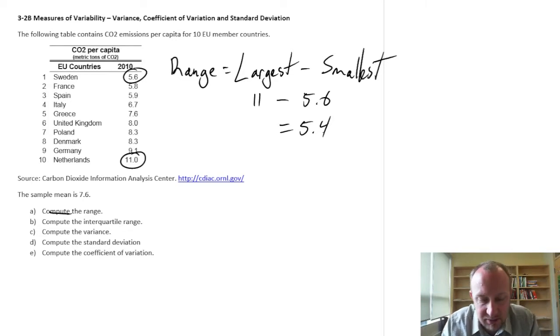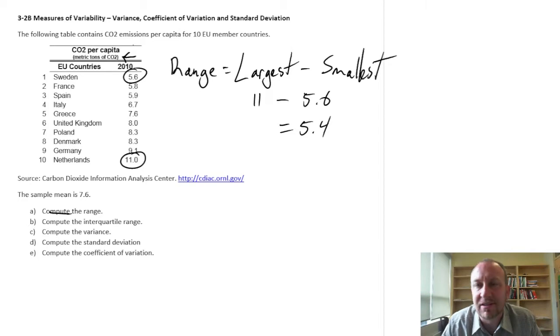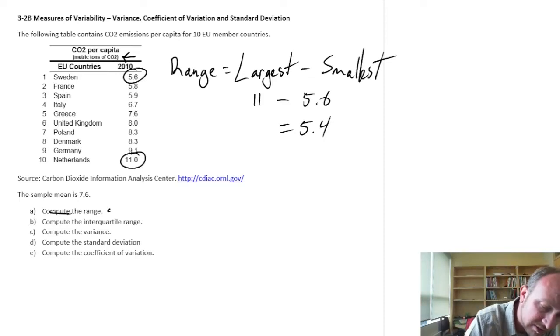In this data set, we're looking at CO2 emissions per person or per capita, and the range, the difference between the smallest and largest, is 5.4. This is measured in the same units as the data itself, so this would be 5.4 metric tons of CO2 per person. That gives us the distance between the smallest and largest value but tells us nothing about what's going on in between.